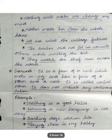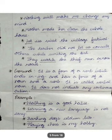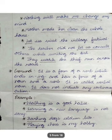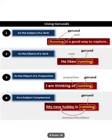'Learning a new language is not easy' — 'learning a new language' is a gerund. Gerunds very often come at the beginning of a sentence. 'Barking dogs seldom bite' — seldom means rarely; 'barking' is a gerund. 'Playing chess is my hobby' — 'playing chess' is the gerund. 'Running is a good way to explore' — 'running' is the gerund acting as a noun.